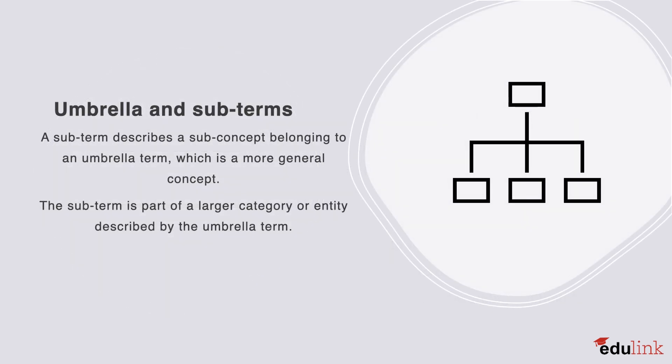The next relation type are umbrella and subterms. A subterm describes a subconcept belonging to an umbrella term, which is a more general concept. The subterm is part of a larger category or entity described by the umbrella term. For example, dog and pet. Dog is a type of pet, but it's critical to note that a pet is not a type of dog.